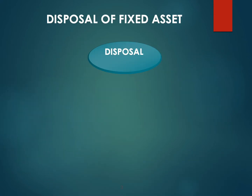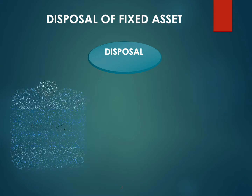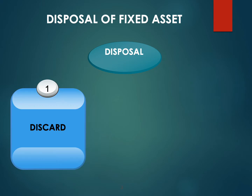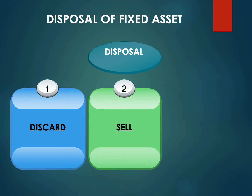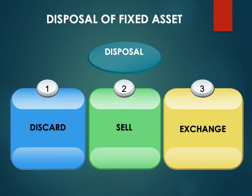Under disposal of fixed asset, there were three types of disposal. The first one: Discharge. The second one: Sell. And the third one: Exchange.